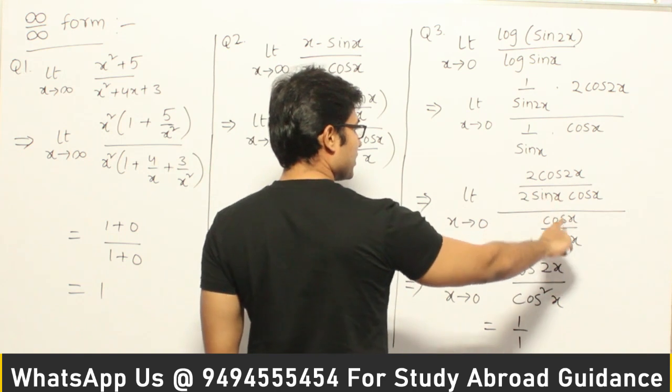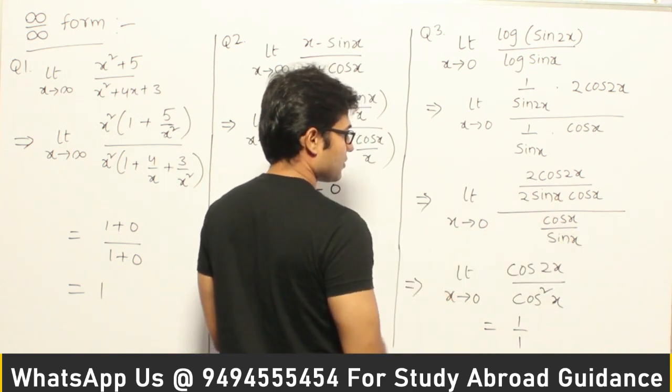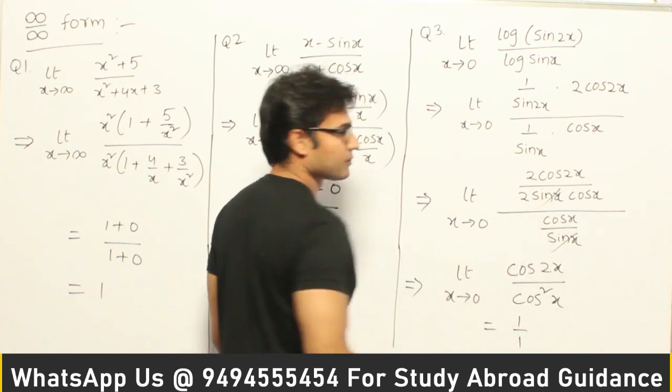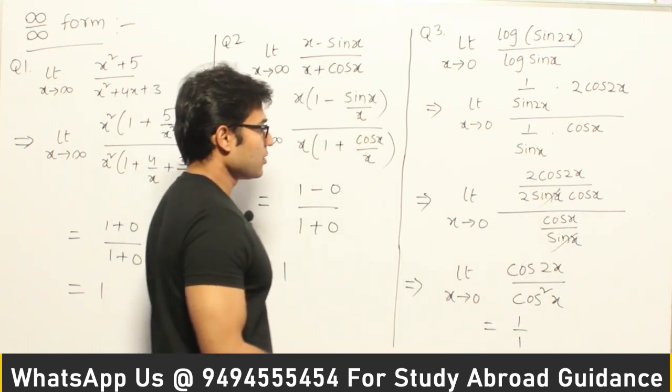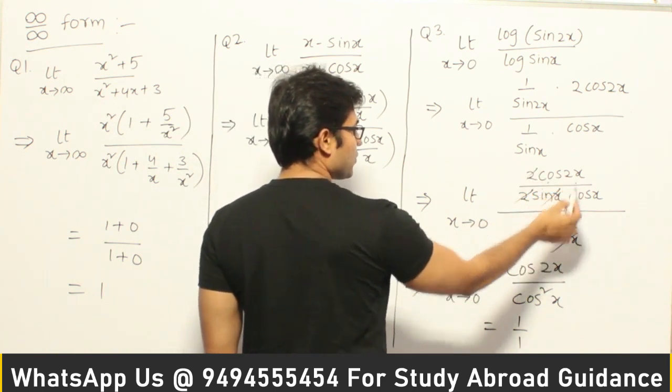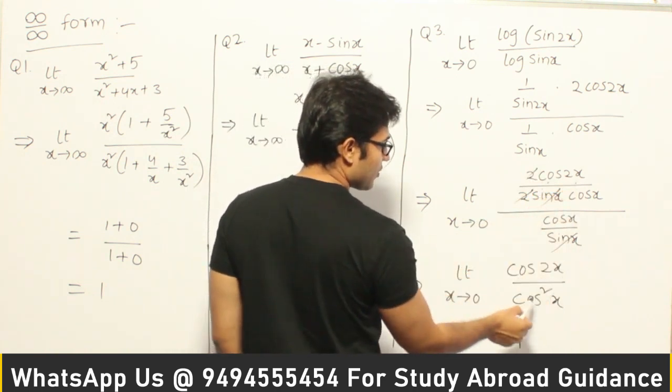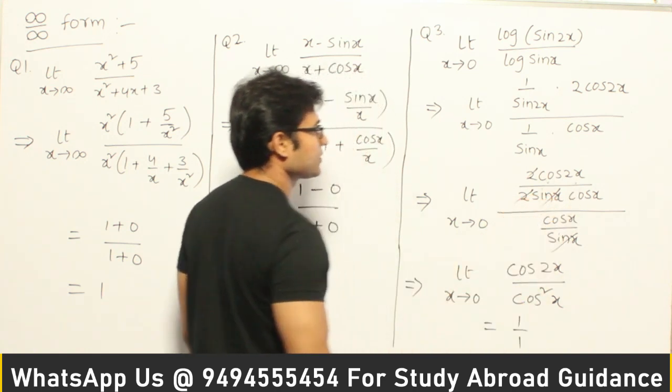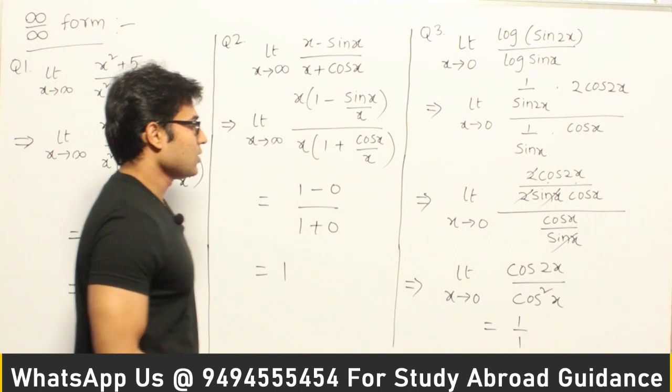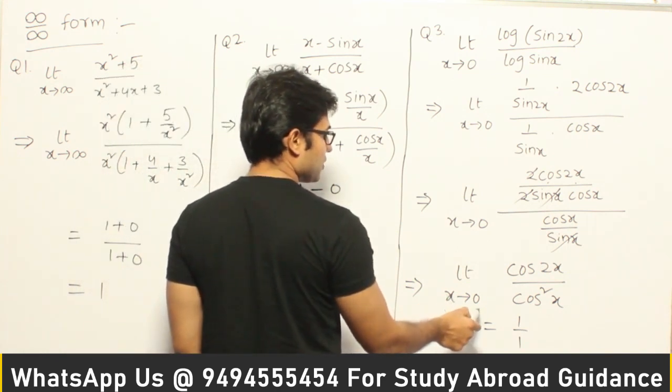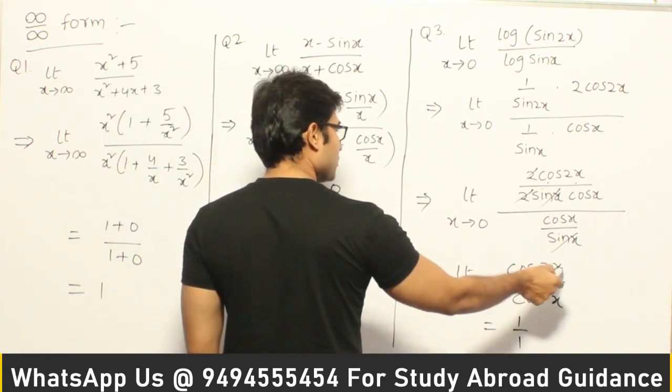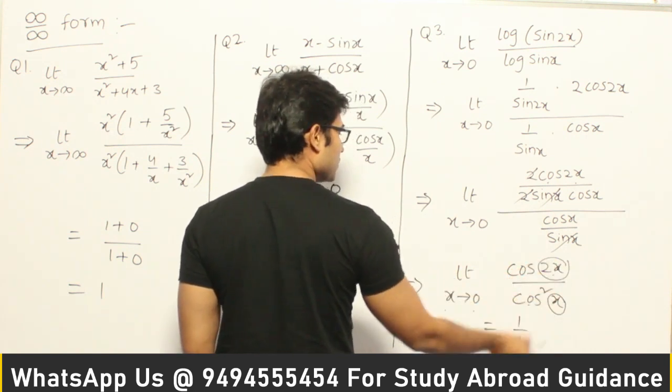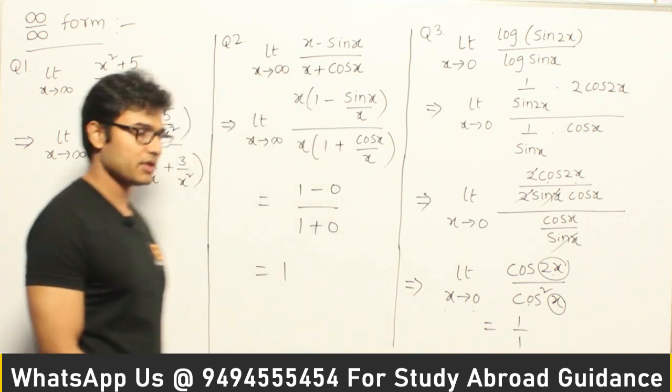And now, this entire function can be written as, I can cancel out this, this, right? And now you are going to get, 2 and 2 is cancelled, cos 2x divided by cos²x, isn't it? Sine is cancelled, cos 2x divided by cos²x, right? So now if we apply limit x tends to 0, we know that cos 2x, this entire thing is 0 and cos 0 is 1. And again, this entire thing is 0 and cos 0 is 1. Therefore, 1 by 1, there is 1. Got it? Okay.